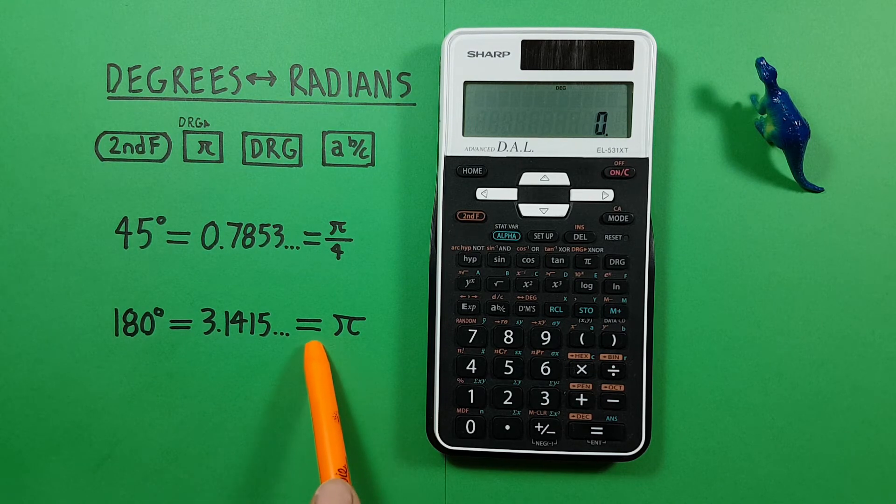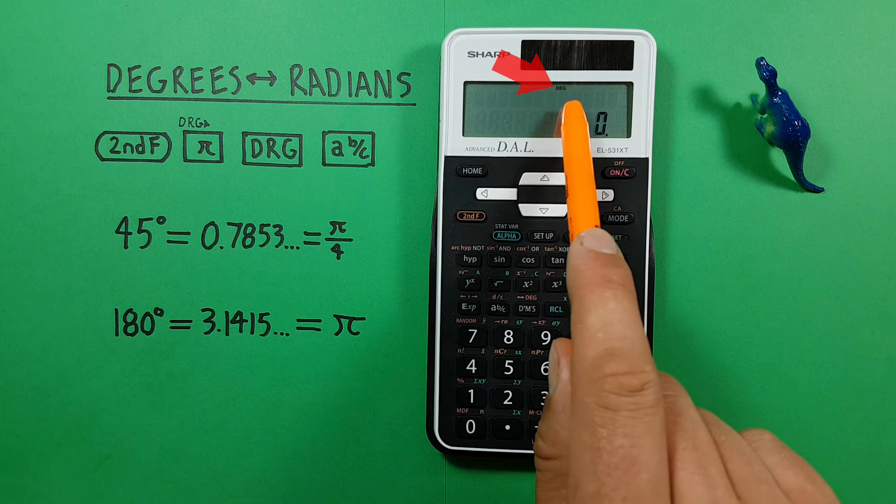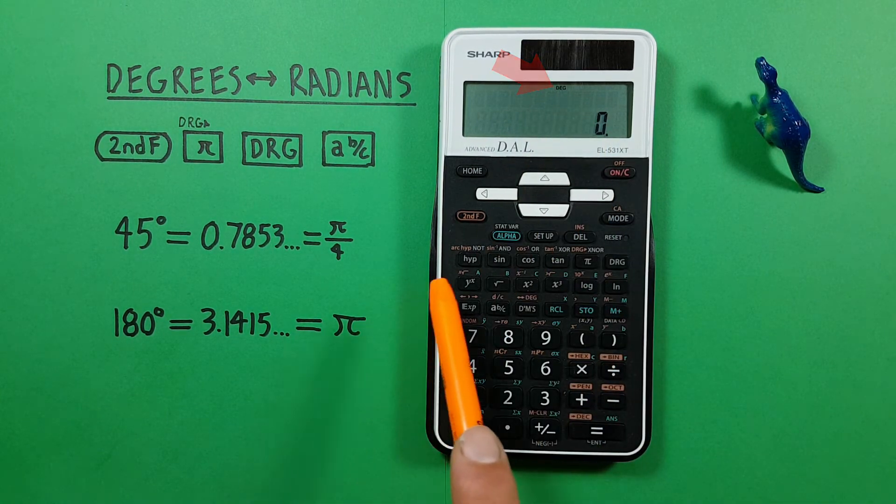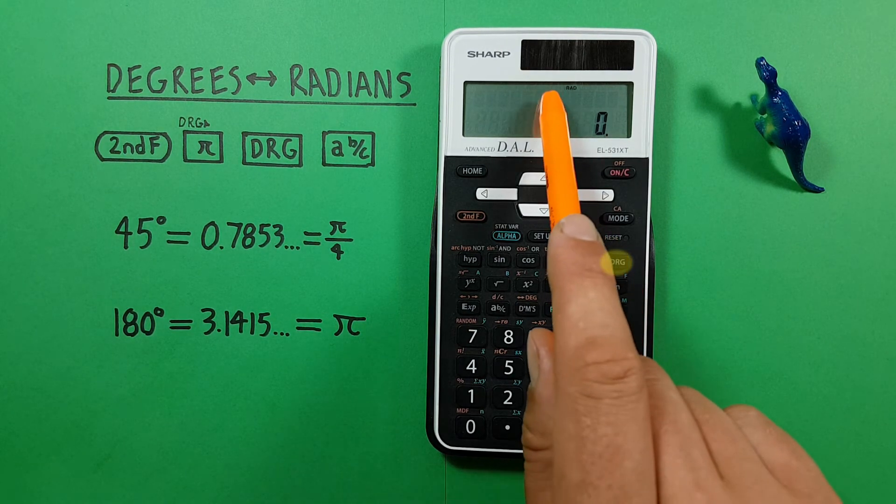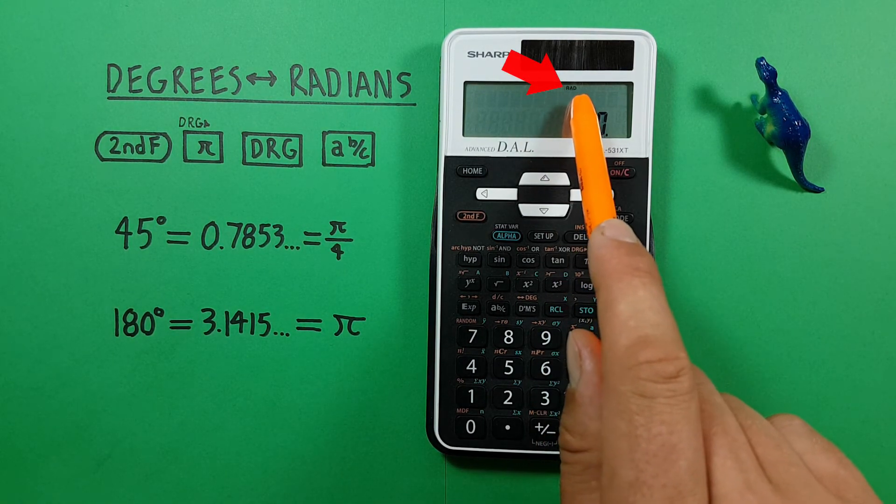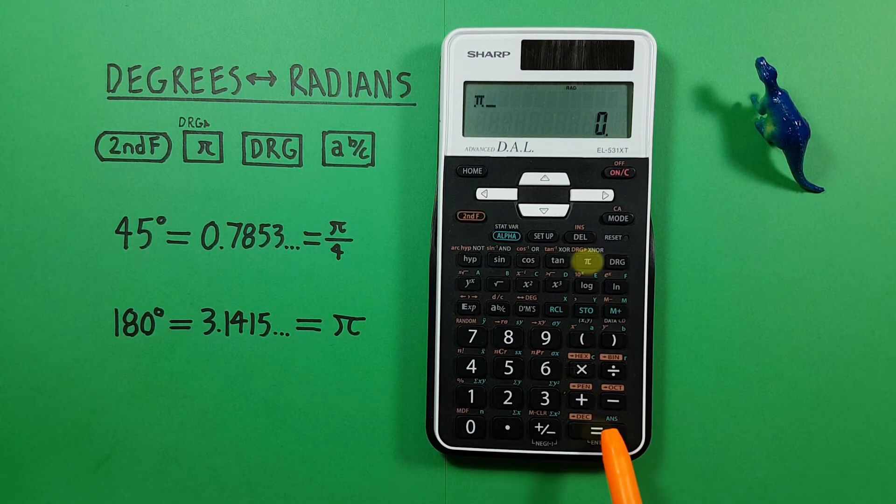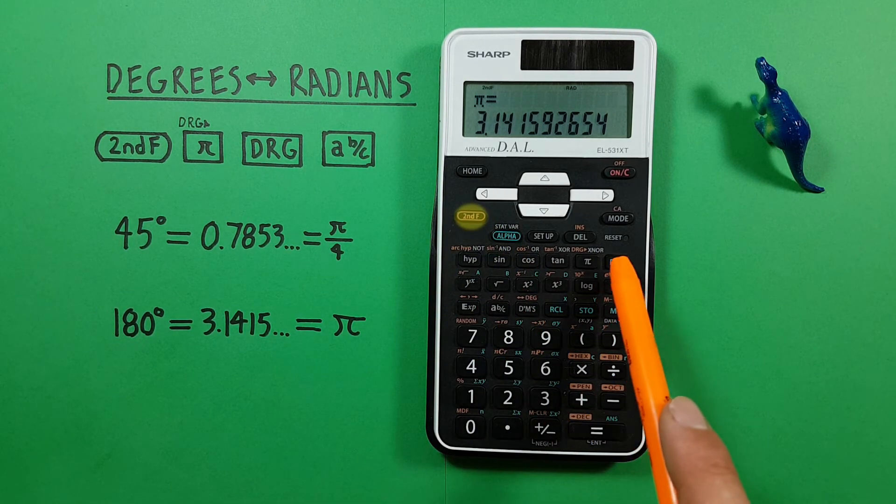And again, let's say we are given pi. Notice that our mode has changed. So we want to change this to radians mode. We do that by pressing the DRG key until we see rad at the top. Next, we enter our pi and then use the conversion. So second function, pi, there we go.